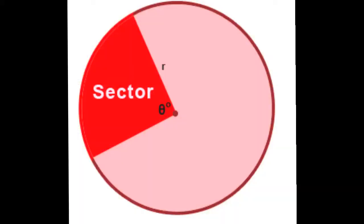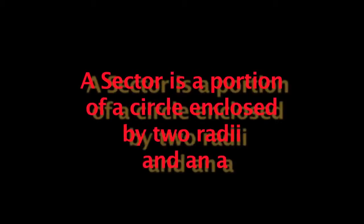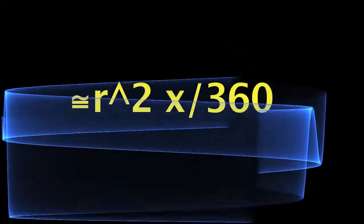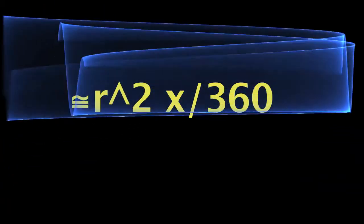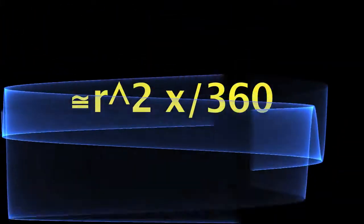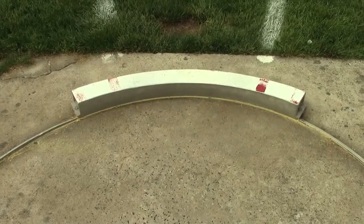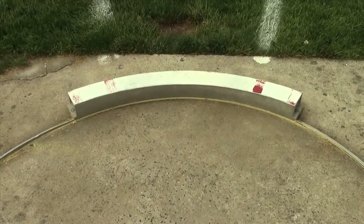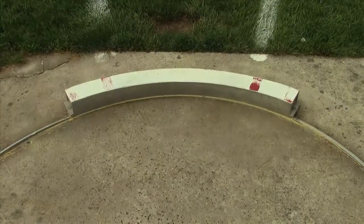Now we're going to take a look at sectors. A sector is a portion of a circle enclosed by two radii and an arc. The formula for finding the area of a sector is pi r squared times the central angle over 360. Ryan is going to explain how to find the area of this particular sector of the throwing circle.